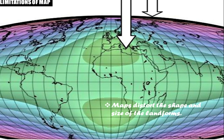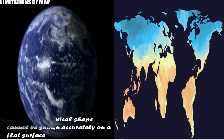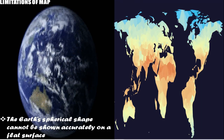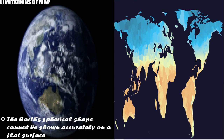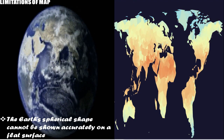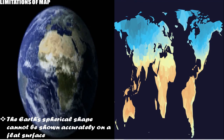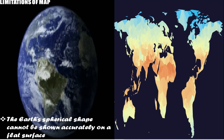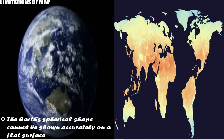The limitation of maps is that they distort the shape and size of landforms, because the earth's spherical shape cannot be shown accurately on a flat surface. It is simply not possible to flatten the spherical shape of the earth completely and represent it accurately.